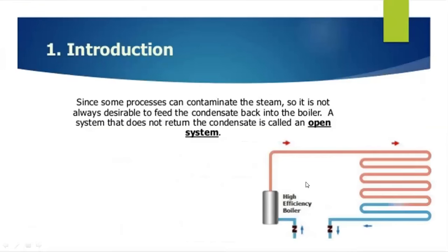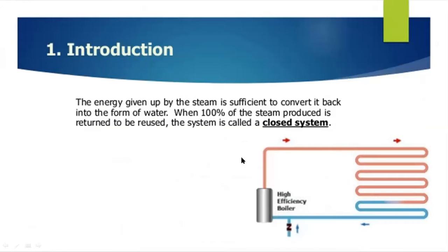Since some processes can contaminate the steam, it is not always desirable to feed the condensate back into the boiler. In such systems we do not return the condensate — we normally call it an open system. If we return it back, we call it a closed system. If we return 100% condensate back, we normally call it a high efficiency boiler, because we are not losing the steam that is there in the condensate.